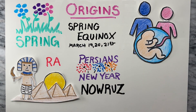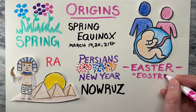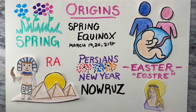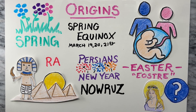The word Easter itself may have come from the Old English word Eostre, the name of the pagan goddess associated with spring and fertility. However, this is not a universally accepted theory among scholars.